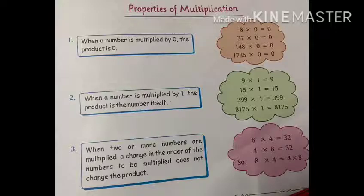As you all know that 9 ones are 9, 15 ones are 15, and so similarly, if we multiply 399 by 1, we get the answer 399. And in the last example, you can see if we multiply 8,175 by 1, the answer will be 8,175.